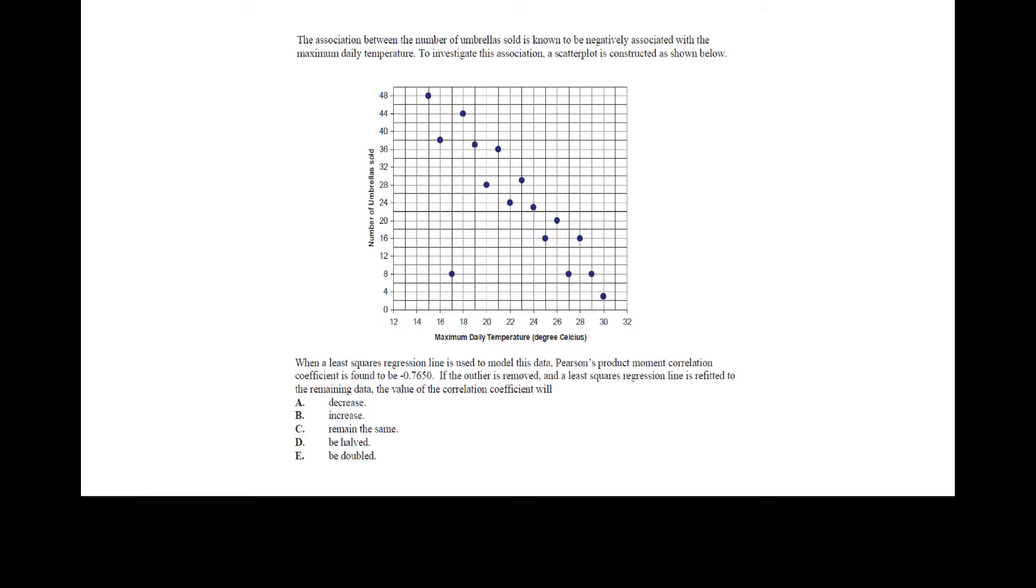Okay this question here we're given a scatterplot and we're told that we have a negative association between maximum daily temperature and the number of umbrellas sold and so here's our scatterplot and it says down below at least squares regression line is used to model this data Pearson's product moment correlation coefficient is found to be negative 0.7657 so we're saying r is negative 0.7650. If the outlier is removed and see we've got an outlier here at 17 and 8. If the outlier is removed and the least squares regression line is refitted to the remaining data the value of the correlation coefficient will be.